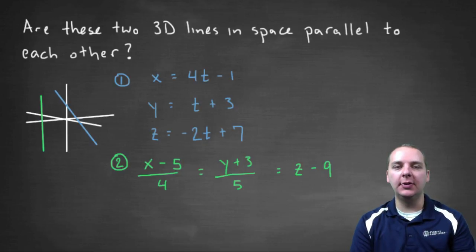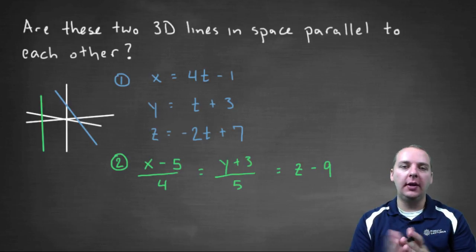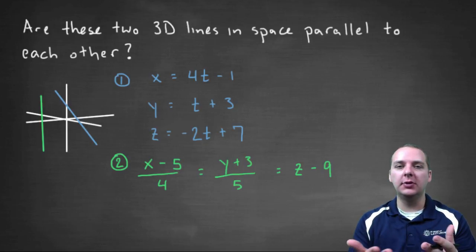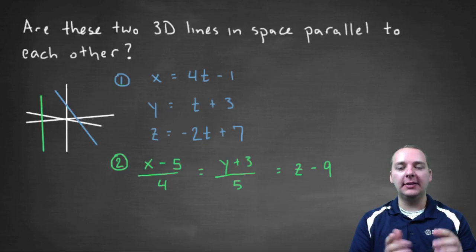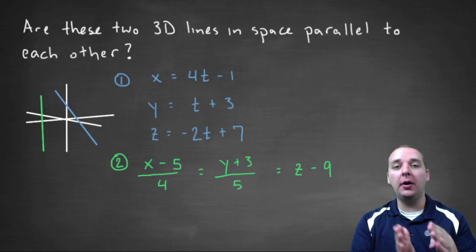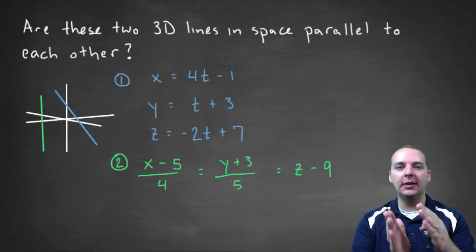In this exercise we're being asked to determine if two lines in space are parallel to one another. Now in two dimensions this was really straightforward. We remember from our old algebra days that if two lines had the same slope then they were parallel. They ran side by side and they went in the same direction.